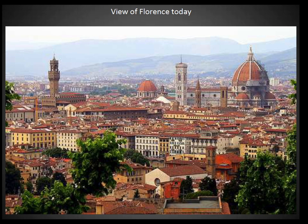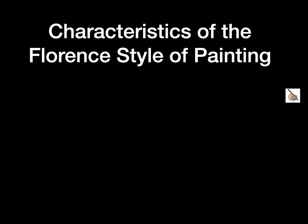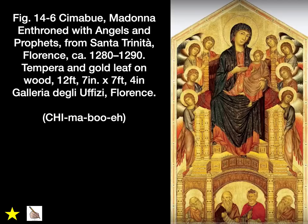The first artist we will talk about is from Florence. Our first art piece is a tempera painting using gold leaf on wood, made by Cimabue, titled Madonna and Throne with Angels and Prophets, located in Florence. It was made between 1280 to 1290.